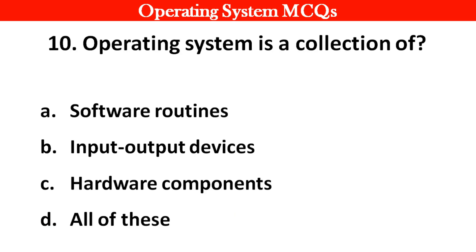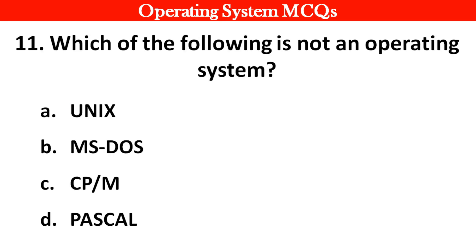Next question: An operating system is a collection of: Options: A. Software routines. B. Input-output devices. C. Hardware components. D. All of these. Right answer is option A: Software routines.